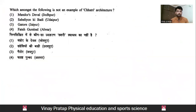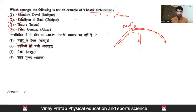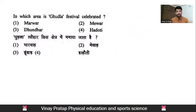The next question: which among the following is not an example of chhatri architecture? Chhatri architecture is basically a dome-shaped architecture. For example, if you are building any architecture and it has this type of dome structure — like Muslim architecture — Muslims built gumbad (dome) type architecture. Those are basically what is referred to here as chhatri-related or gumbad/archi chhatri type architecture. Options include Mandor, Devil, Jaipur, and Sahelia ki Baati.